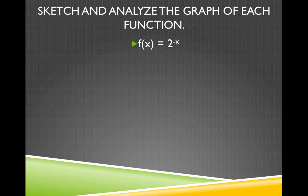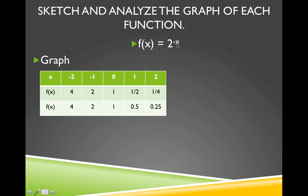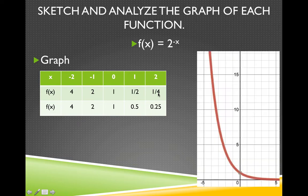Let's look at another: f of x equals 2 to the negative x. We'll graph this again using a table. When I put in negative 2, the opposite of negative 2 is positive 2, and 2 squared is 4. When I put in negative 1, the opposite is 1, and 2 to the first is 2. When I put in 0, I get 2 to the 0, which is 1. When I put in 1, I get 2 to the negative 1, the reciprocal of 2, which is 1 half. When I put in 2, I get 2 to the negative 2, the reciprocal of 2 squared, which is 1 fourth.